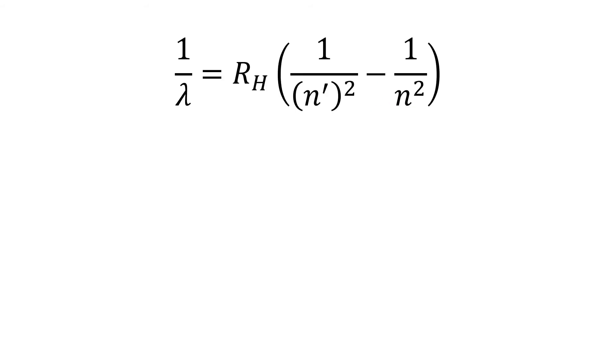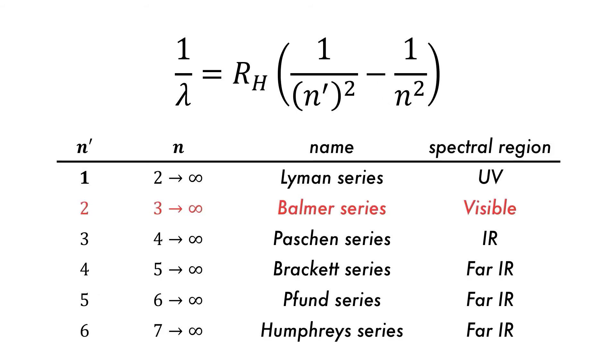The Rydberg equation is applicable to any spectral series of hydrogen from the Lyman through Balmer to the Humphrey series. In each of these series, their spectral region changes and so does the value of n'.